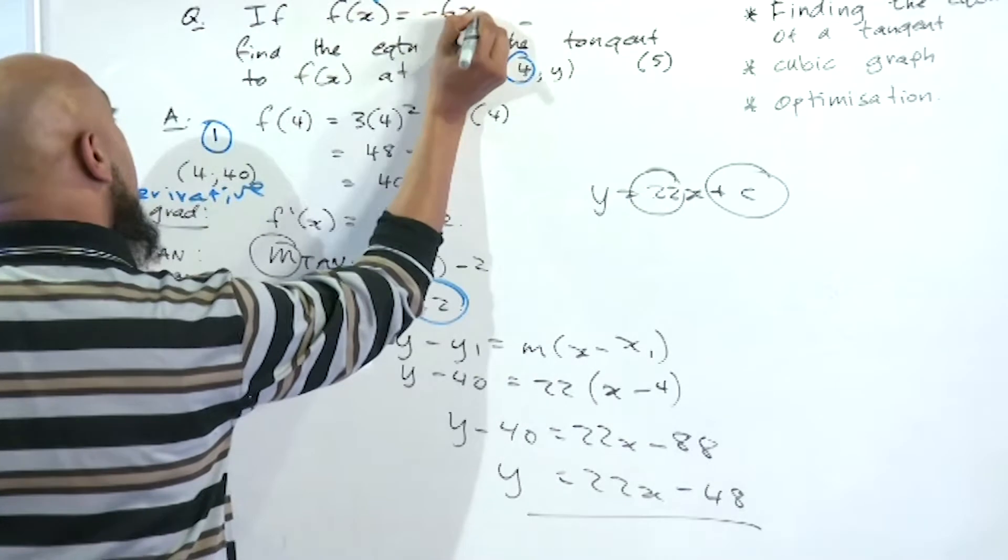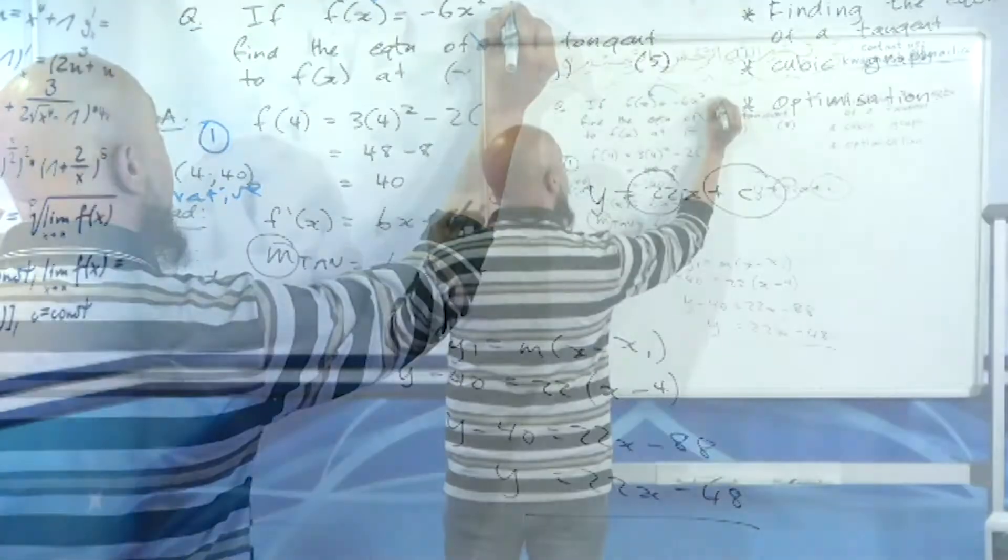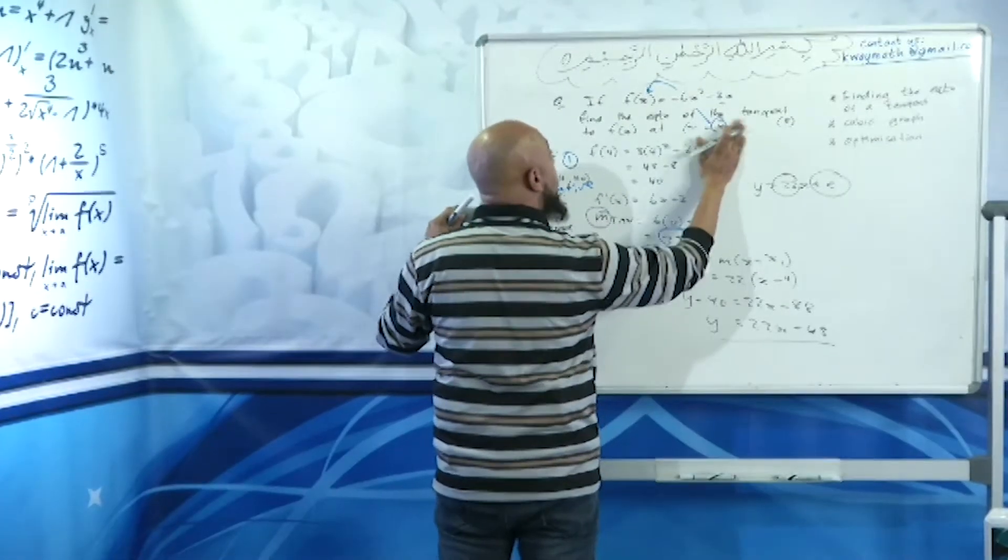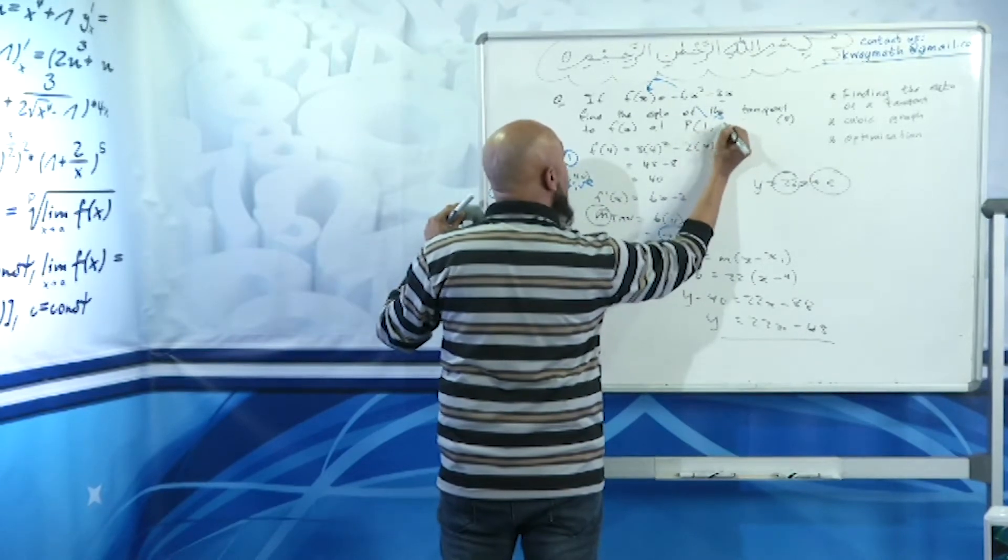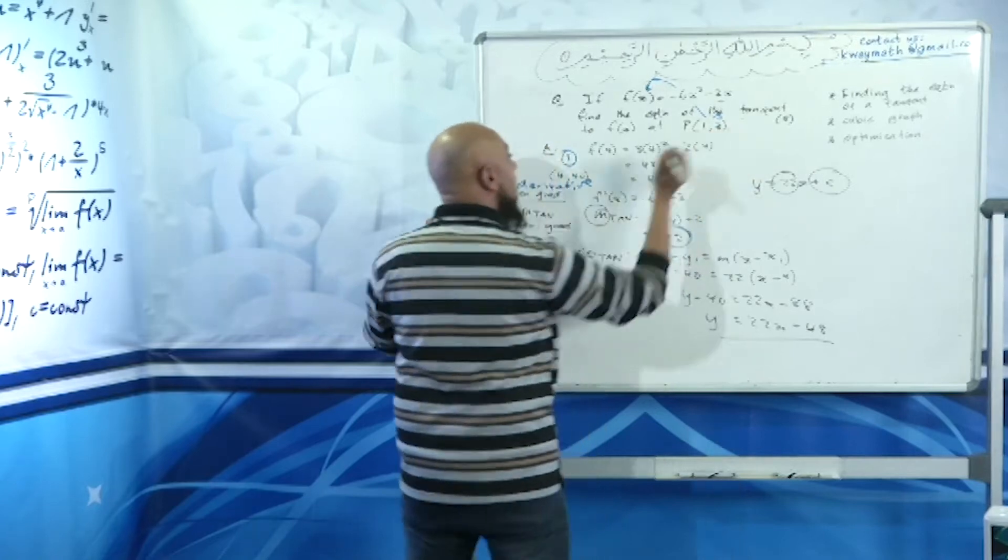The function is f(x) = -6x² - 2x at the point P(1, 3).